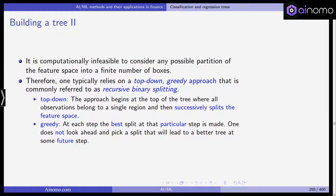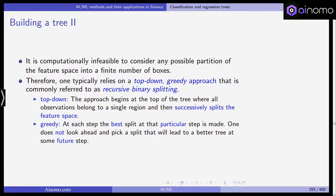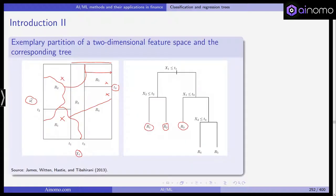So it's computationally infeasible to consider any possible partition of the feature space even into a finite number of boxes. But if you increase, if you decrease the size of the boxes, if you increase the resolution, you could even get to an infinite number of boxes. So therefore one typically relies on a top-down so-called greedy approach that is commonly referred to as recursive binary splitting. So what do you do? It's top down because as we've seen in this slide here, you start at the top, you start at the top of the tree where you have all observations and they belong to a single region. So you start with the full sample and then you successively split the full feature space into halves and then you go on top down.